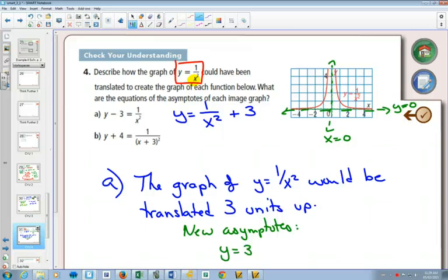It would get moved to y equals 3. What would happen to the vertical one at x equals 0 if you moved it up? It's going to stay the same. So the other one would be at x equals 0.